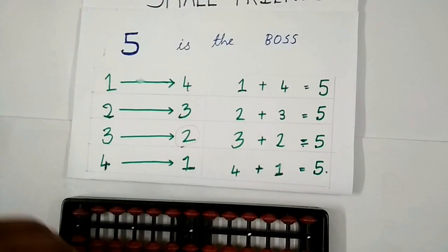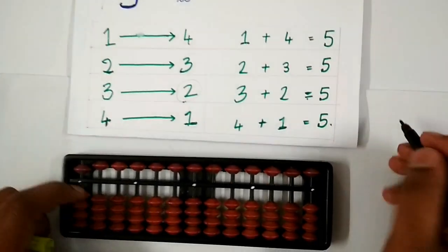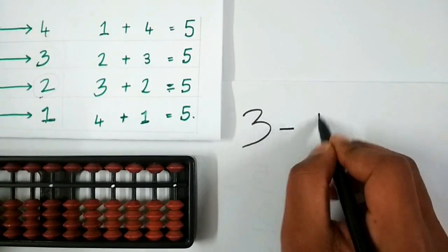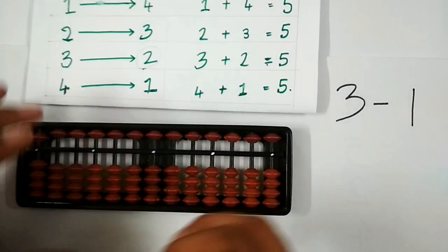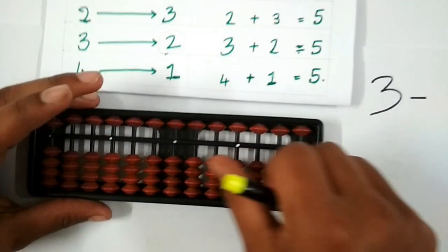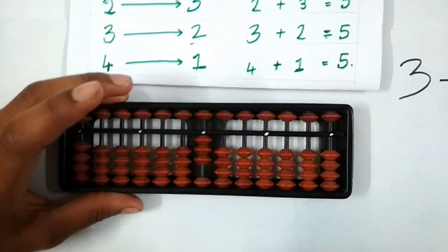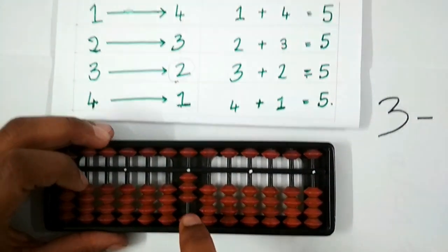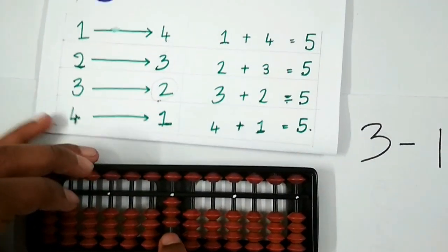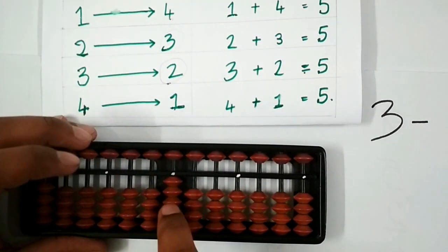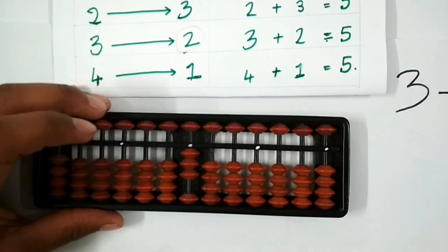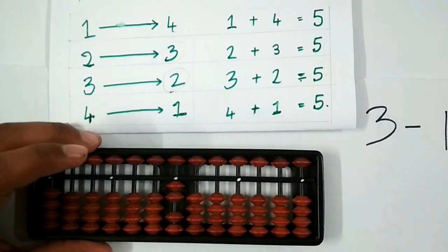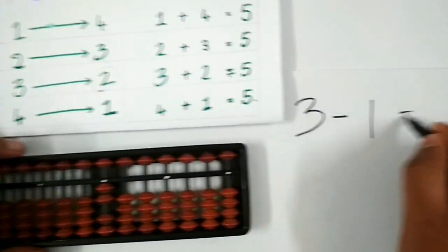Let us try to subtract 3 minus 1. The first step is to place the first number, that is 3, on the abacus. To subtract 1, we first check whether we have enough beads to subtract at the lower end. We see that we have enough beads, so we subtract 1 and get the answer as 2.